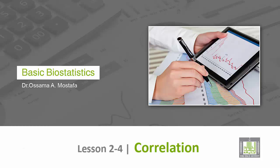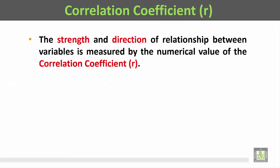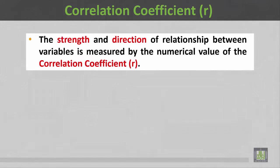Correlation coefficient R. The strength and direction of the relationship between variables is measured by the numerical value of the correlation coefficient.